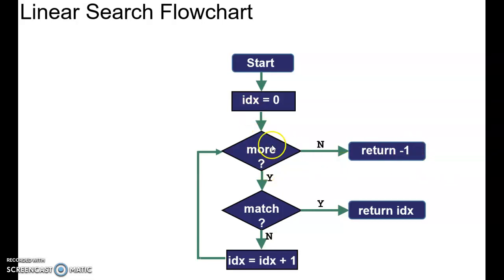Or, if we have more, okay, go down and check: have we a match? If we have a match, return the index of where you found the item. But if you don't have a match, increment the index by one and go back and check if you have more items.